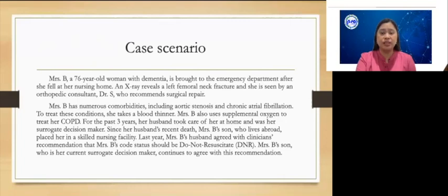Last year, Mrs. B.'s husband agreed with clinicians' recommendation that Mrs. B.'s code status should be DNR. Mrs. B.'s son, who is her current surrogate decision-maker, continues to agree with his recommendation.